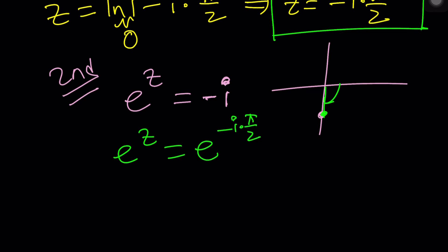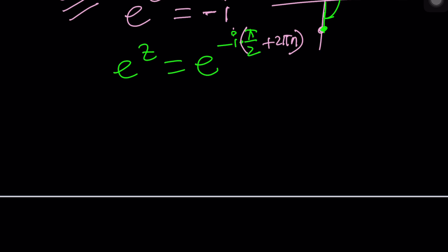So its principle argument is negative pi over two. But of course, you are allowed to add multiples of two pi. So why not do this in a more general case here? Let's just add two pi n and then we can leave the i outside or the negative i. And now from here we get z equals negative i times pi over two plus two pi n.